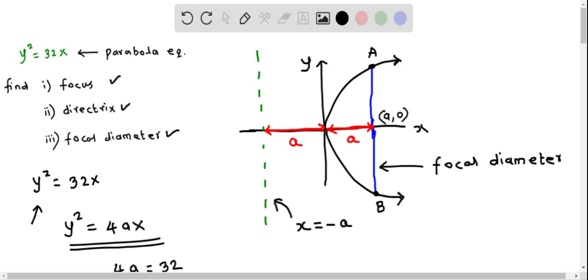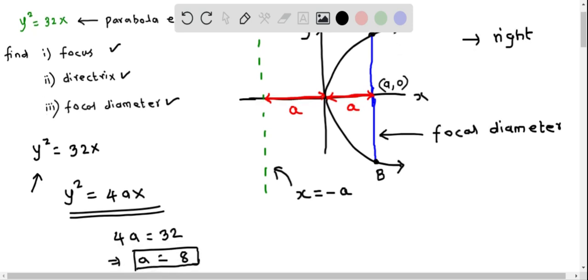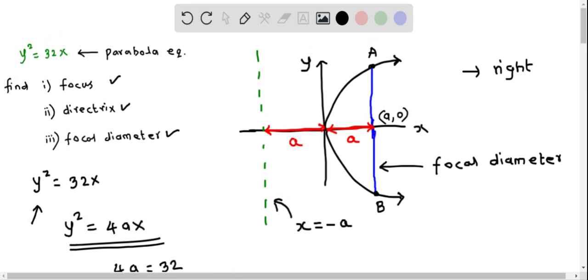Notice that I have drawn this type of parabola opening to the right because a is positive. We found the value of a = 8, which is greater than 0. For this type of parabola, when a > 0, it opens to the right.